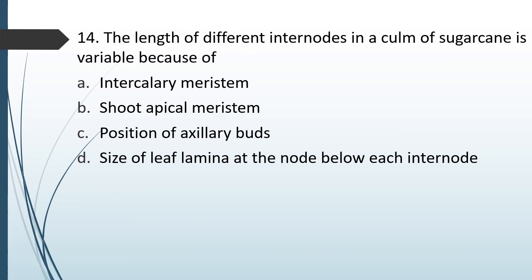Question No. 83: The length of different internodes in a culm of sugarcane are variable because of: intercalary meristem, shoot apical meristem, position of axillary buds, or size of leaf lamina at the nodes below each internode. The correct answer is Option A — because of the intercalary meristem.